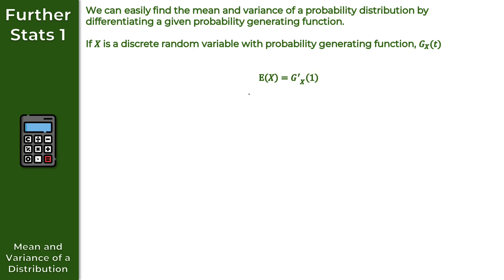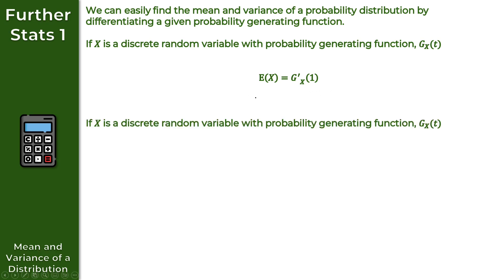That is a nice easy result to remember. Now for the variance, which we denote as var x, this is equal to g double prime of x when t equals 1, plus g prime of x when t equals 1, minus g prime of x when t equals 1 squared. This result is a little more challenging to remember; however, the good news is that we are given these results in the formula book.